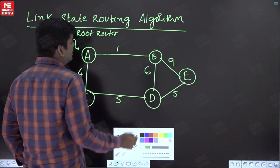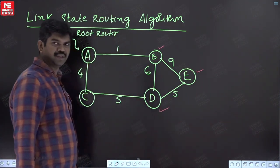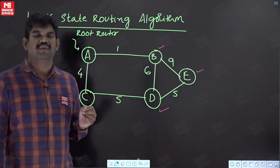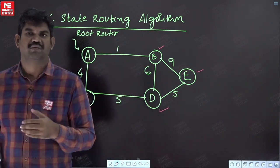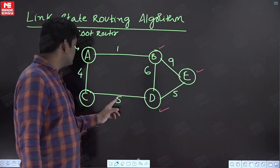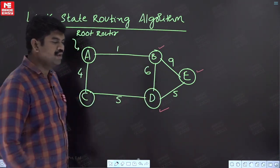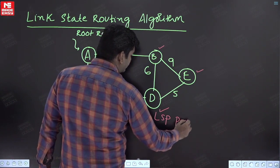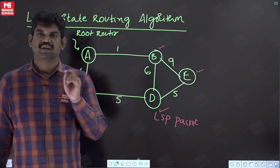The common logic is every router will have some initial information. If you observe router D, every router knows the information of its directly connected routers. So router D knows that it is connected to C as 5 units, to B as 6 units, and to E as 5 units. That information is called an LSP packet — a control packet. LSP means link state packet.